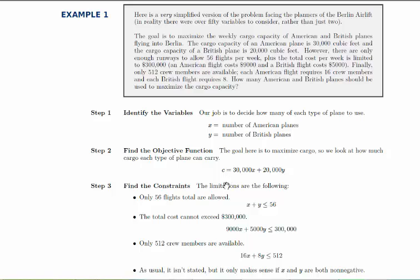For the constraints, we have the limitations that there are only 56 total flights. The total cost can't exceed 300,000. And we only have 512 crew members available. So we've got to go through one by one and think about how to define these constraints in terms of x and y. If we only have 56 total flights to work with, that means the number of American flights plus the number of British flights has to be some number less than 56. So that's what this inequality says, is that x plus y has to be less than or equal to 56.